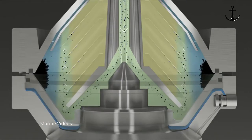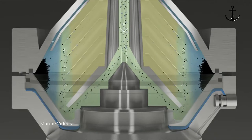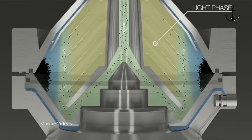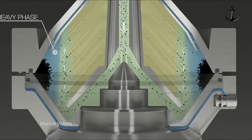Separation takes place inside the bowl as a result of centrifugal force and the different specific weights. The light phase is concentrated in the inner part of the bowl while the heavy phase is forced towards the outer part.